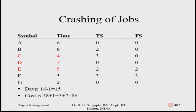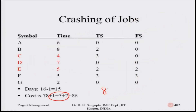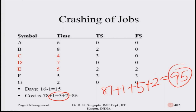The cost structure increases on three accounts: one day reduction in C costs one unit, one day reduction in D costs five units, and one day reduction in E costs two units. The previous total was eighty-seven units, so now it becomes eighty-seven plus one plus five plus two, which equals ninety-five units. Overall, costs have increased from fifty-five to ninety-five units while project duration decreased from twenty-two to fifteen days.